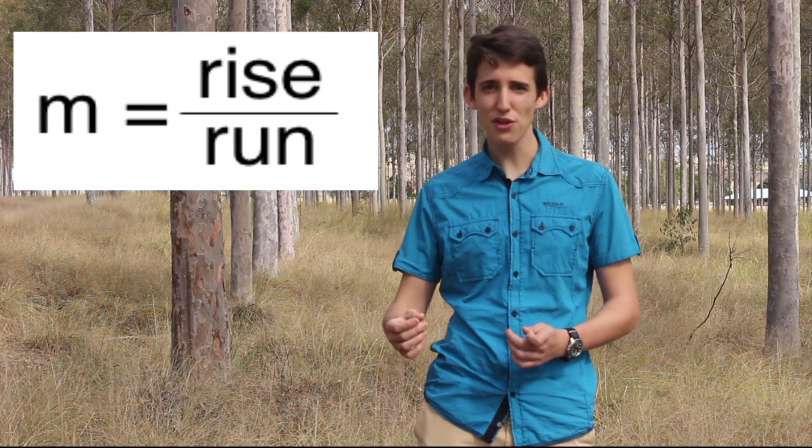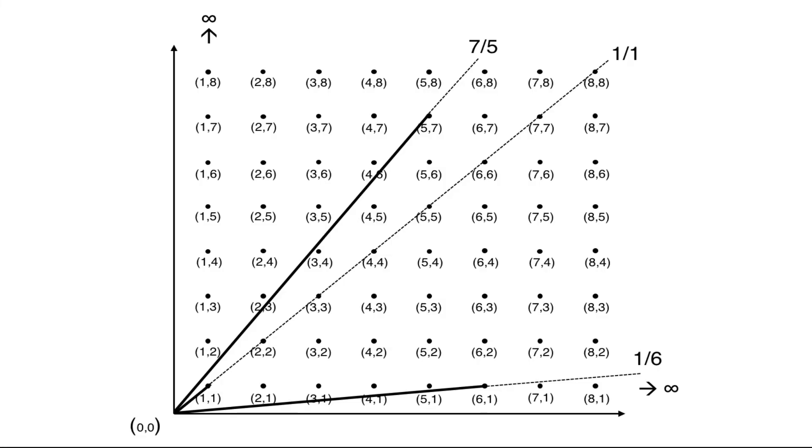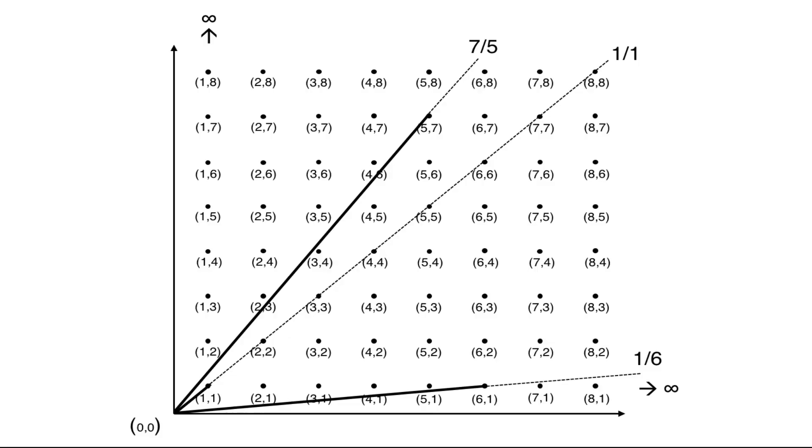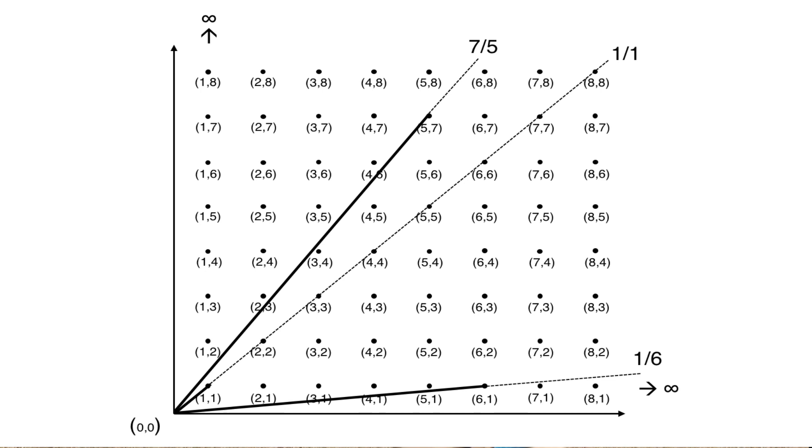A model for this can be produced by describing each tree as mathematically thin. These points can be labelled by using the gradient. Take the closest tree to you, at a position of 1-1. Its gradient, rise over run, is 1. So any tree with a gradient of 1 will be blocked by the first tree. Another example is a tree at 4-3, which has a gradient of 3 quarters. This method of labelling trees is the same for all trees.